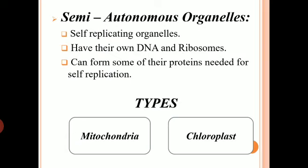And why are they able to replicate themselves? Because they have their own DNA and ribosomes. We will see what kind of ribosomes and what other things are present other than DNA. Due to the presence of DNA and ribosomes, they are able to prepare some of their proteins which are needed for their division, and that's how they are able to replicate themselves.